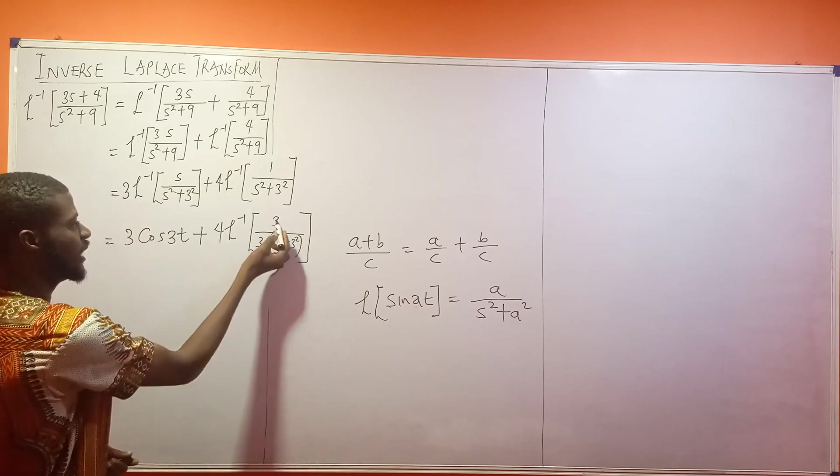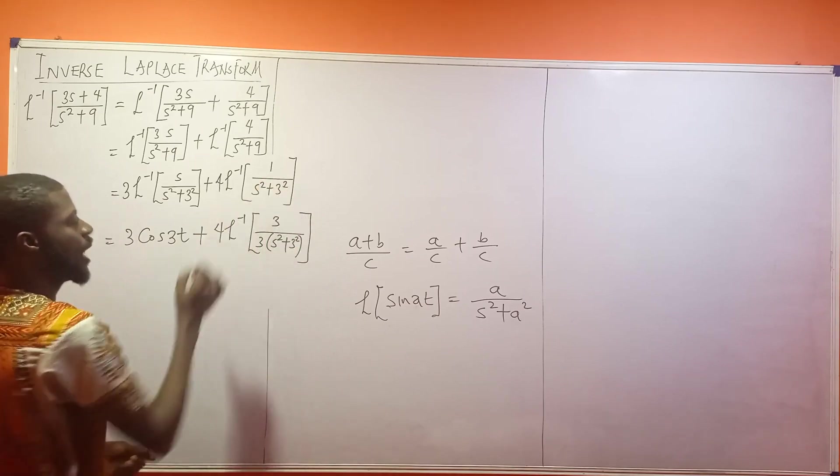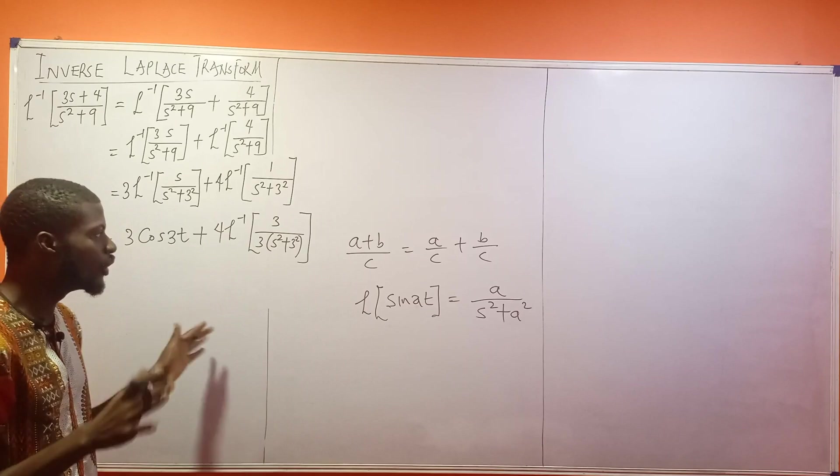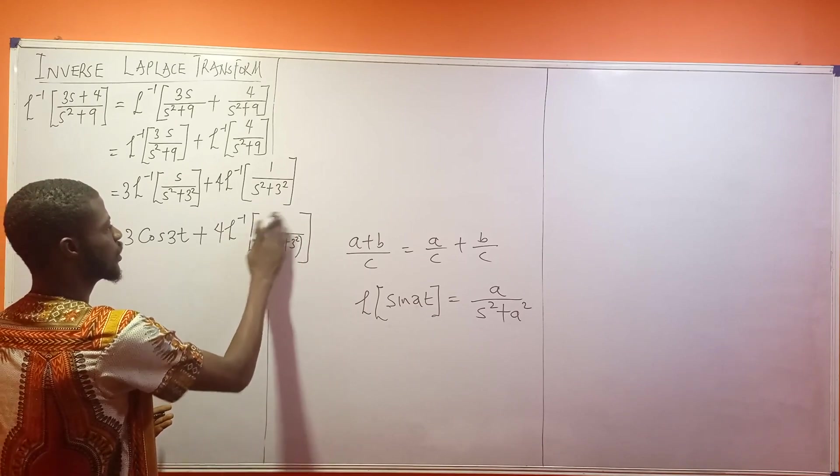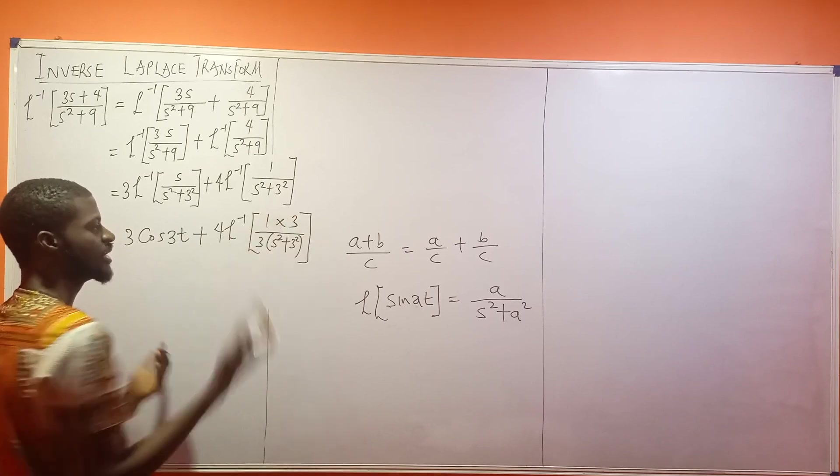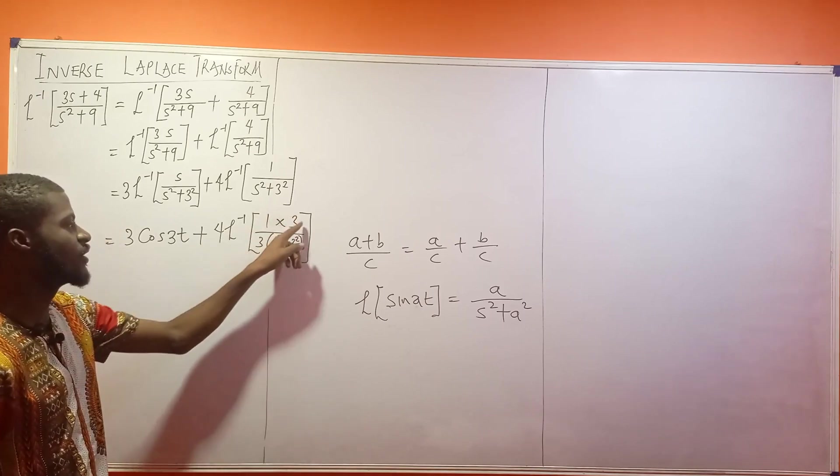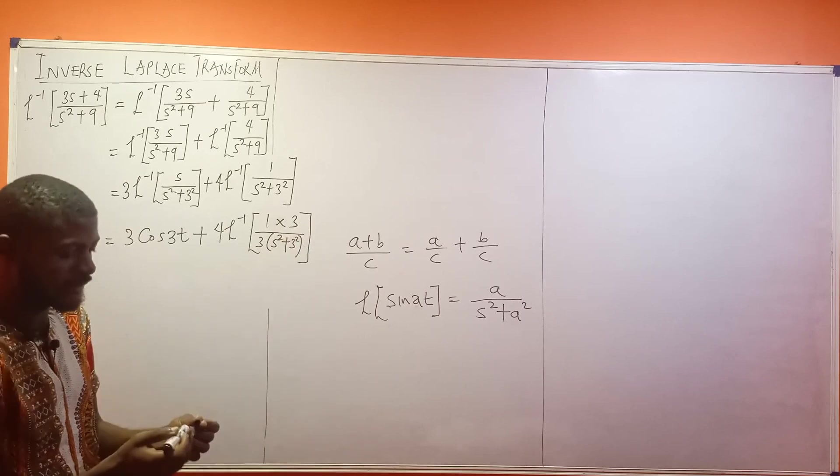Yes, I can do that. Because 3 can cancel 3 to give me 1. So I didn't change anything. Nothing has been changed. So I can just put 1 times 3. Nothing has been changed because 3 can cancel 3 at the end of the day.